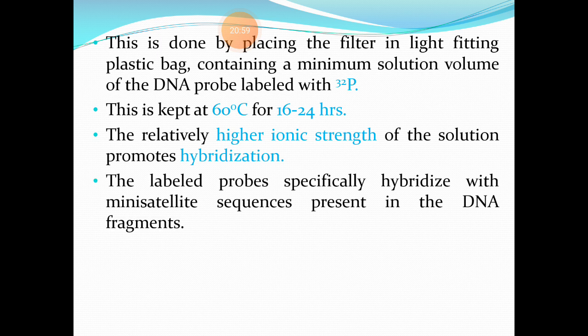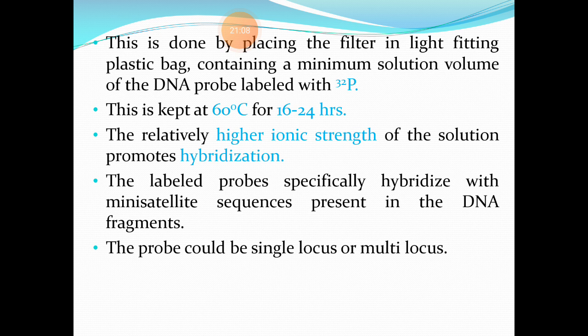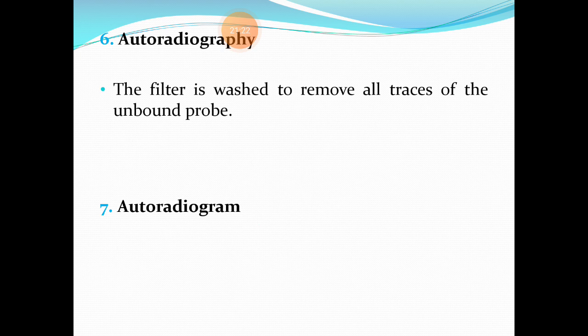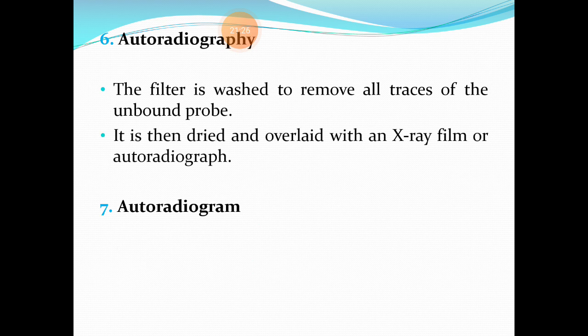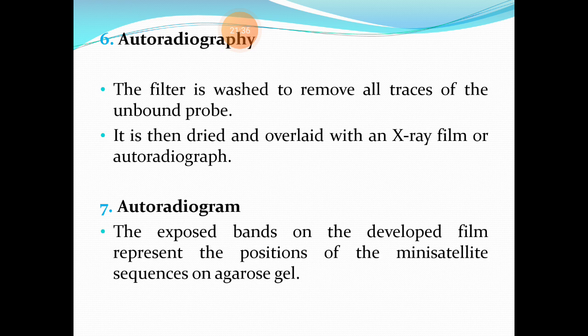The probes hybridize to complementary base pairs on the DNA fragments, and the labeled probes specifically hybridize with the mini satellite sequences present in the DNA fragments. You can use either single locus probes or multi-locus probes depending on the need. Then the filter is washed to remove all traces of unbound probe, dried, and overlaid with an X-ray film for autoradiography. The exposed bands on the developed film represent positions of mini satellite sequences — these positions are individual-specific, allowing meaningful conclusions in civil or forensic cases.